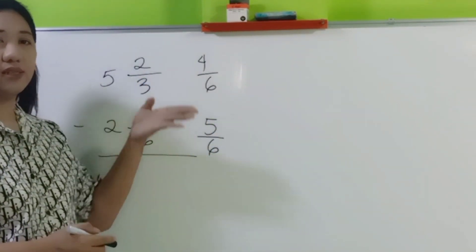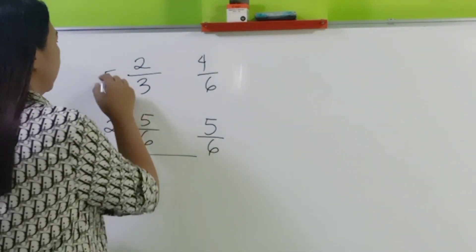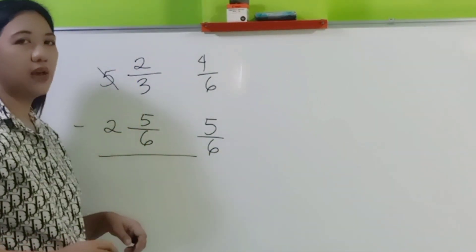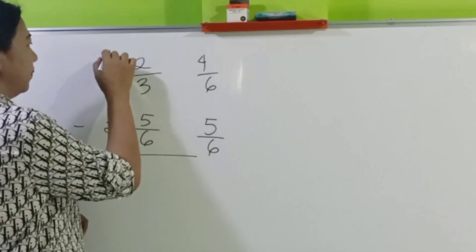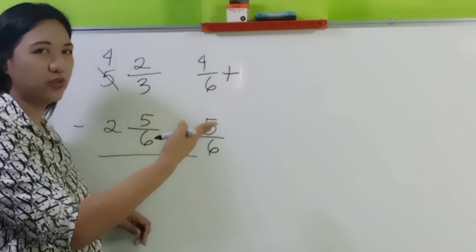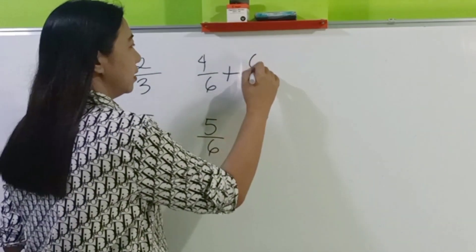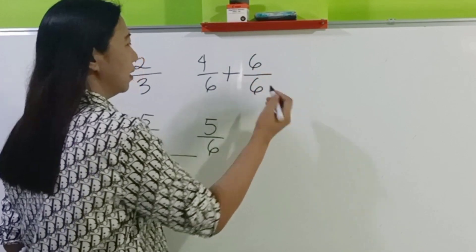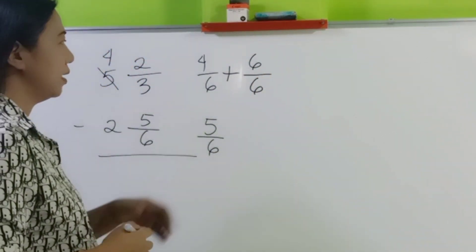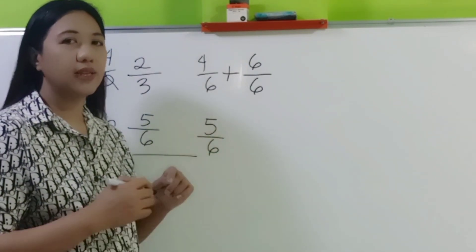Again, the minuend is less than the subtrahend. So we need to borrow. Automatically, this becomes 4. And then add a whole number in fraction form. Let's use the denominator. Next, let's add the numerators and copy the common denominator. So 4 plus 6 is 10 over 6.